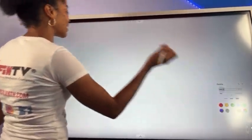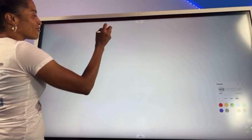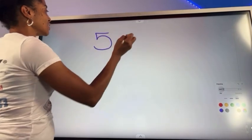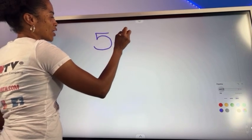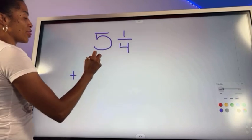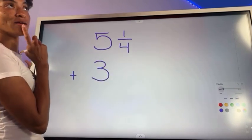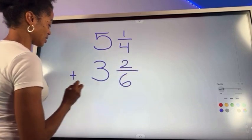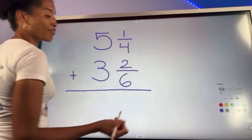So we're looking at, let's start with purple. I like purple. Let's go with 5 and let's go with 1/4, and we're going to add that to 3 and 2 over 6.